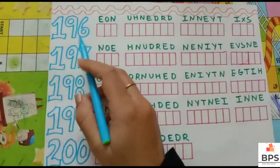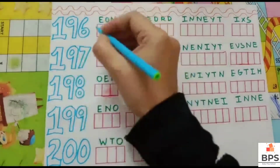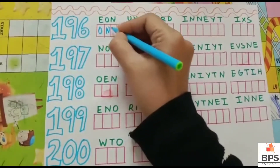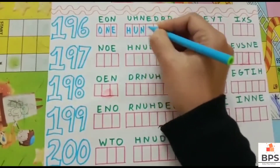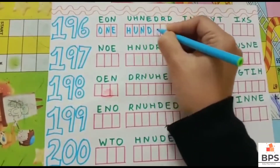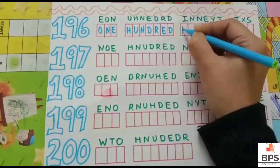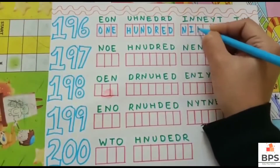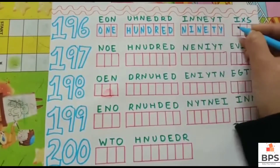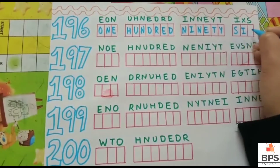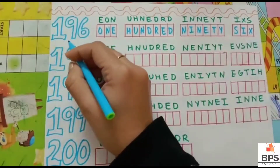196. O-N-E, 1, H-U-N-D-R-E-D, 100, N-I-N-E-T-Y, 90, S-I-X, 6. One hundred ninety-six — 196.